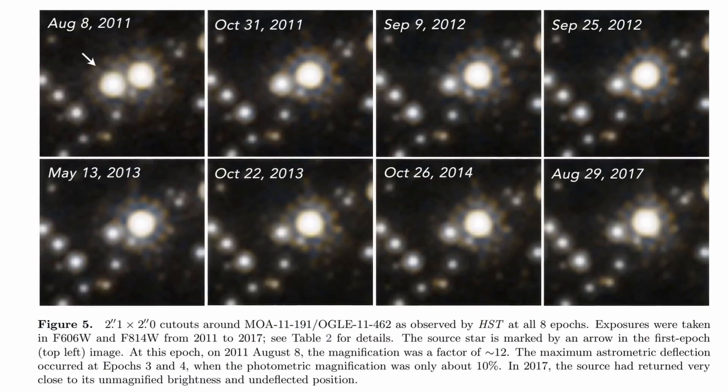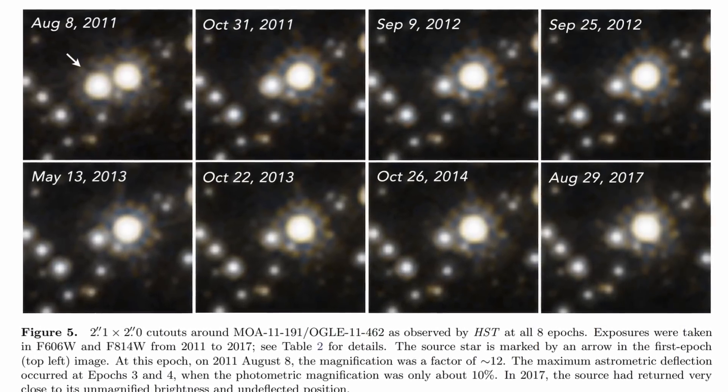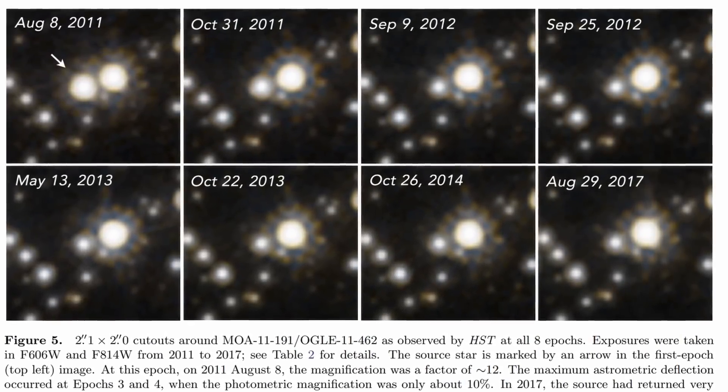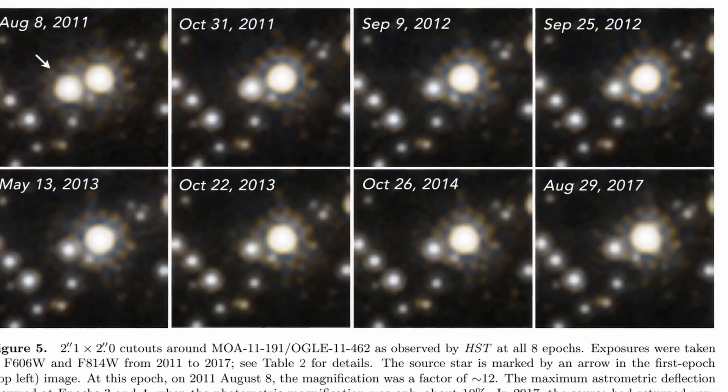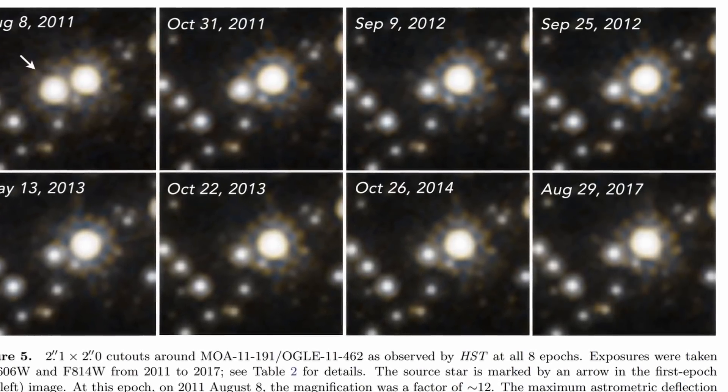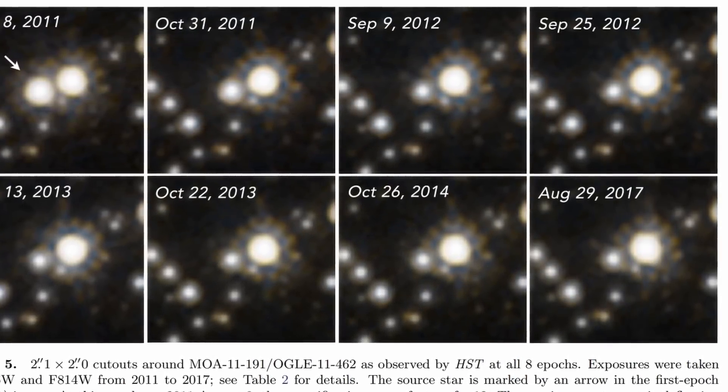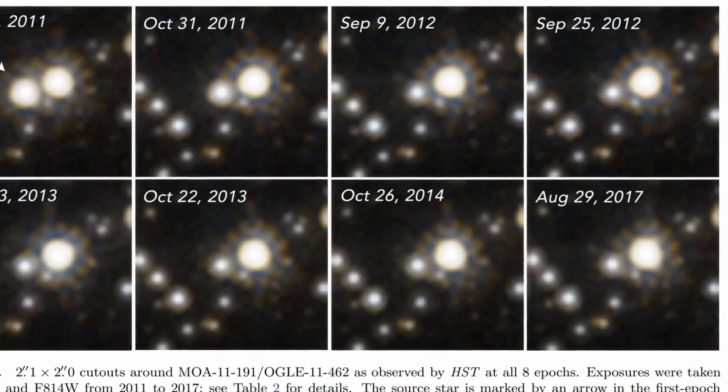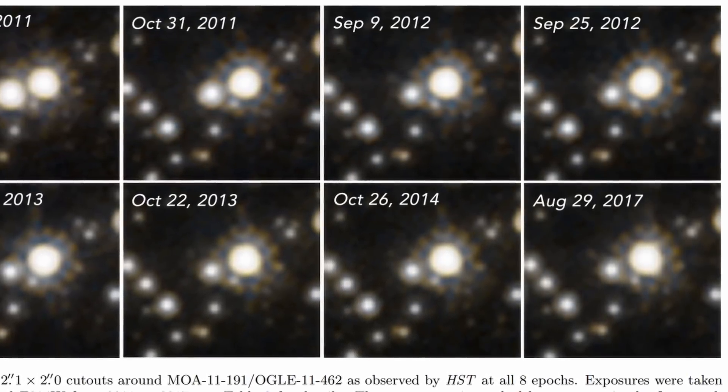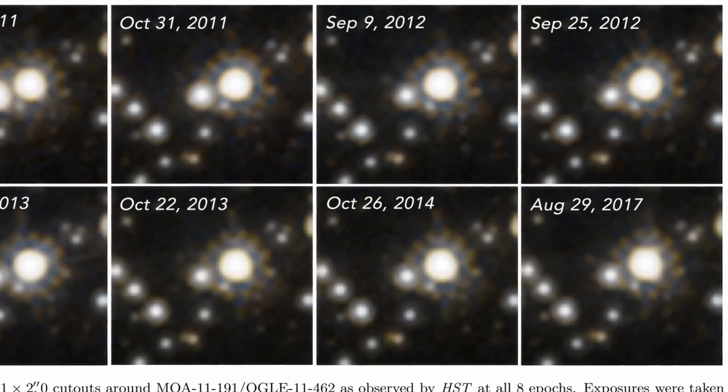These are the actual images taken by Hubble between 2011 and 2017. As you can see, it almost appears as if there are two different stars, and that's because one of the stars here became dramatically brighter over time and the second star is actually a completely different object in a completely different location in the galaxy.